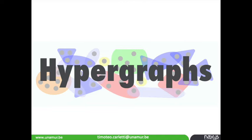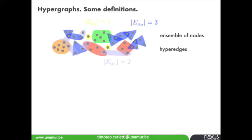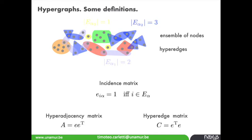In this way we overcome the pairwise interaction limitation of networks. Without entering too much into mathematical details, a hypergraph consists of an ensemble of nodes grouped into subsets of different sizes called hyperedges, represented in my picture by colors of different sizes.